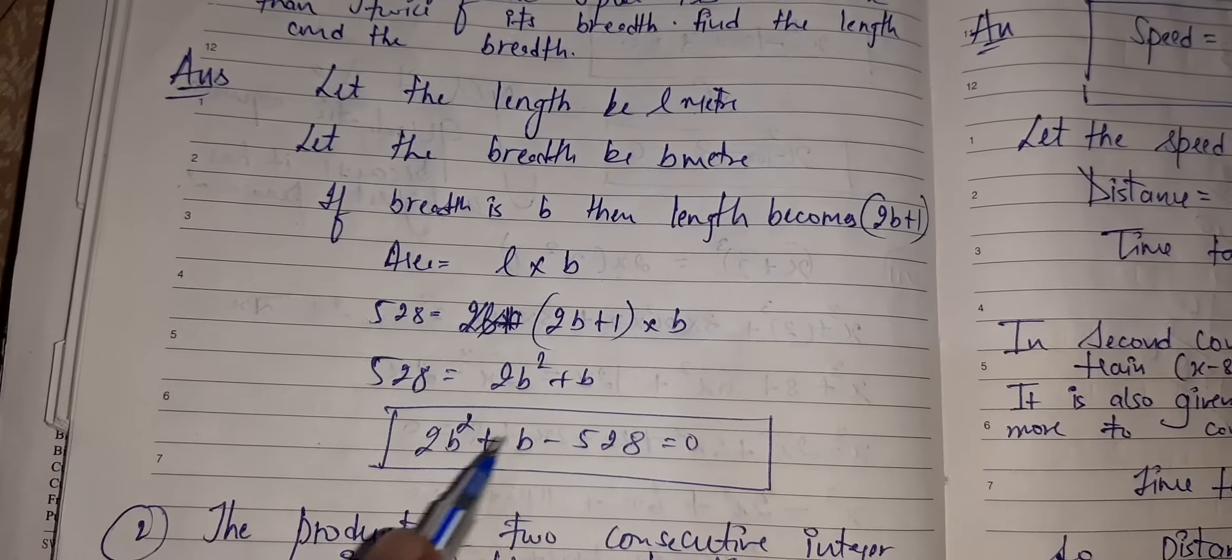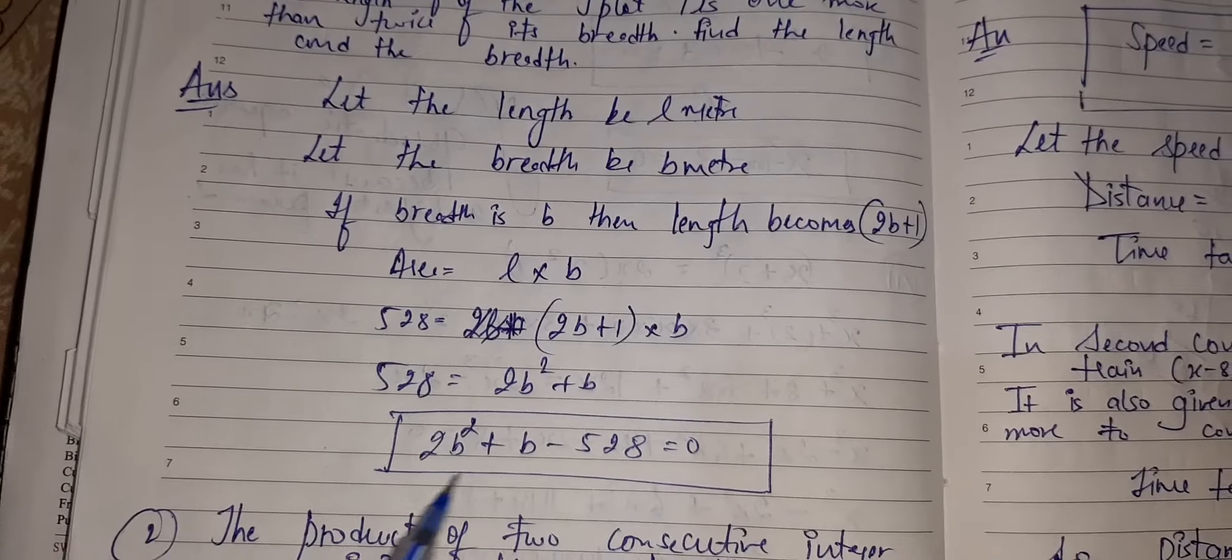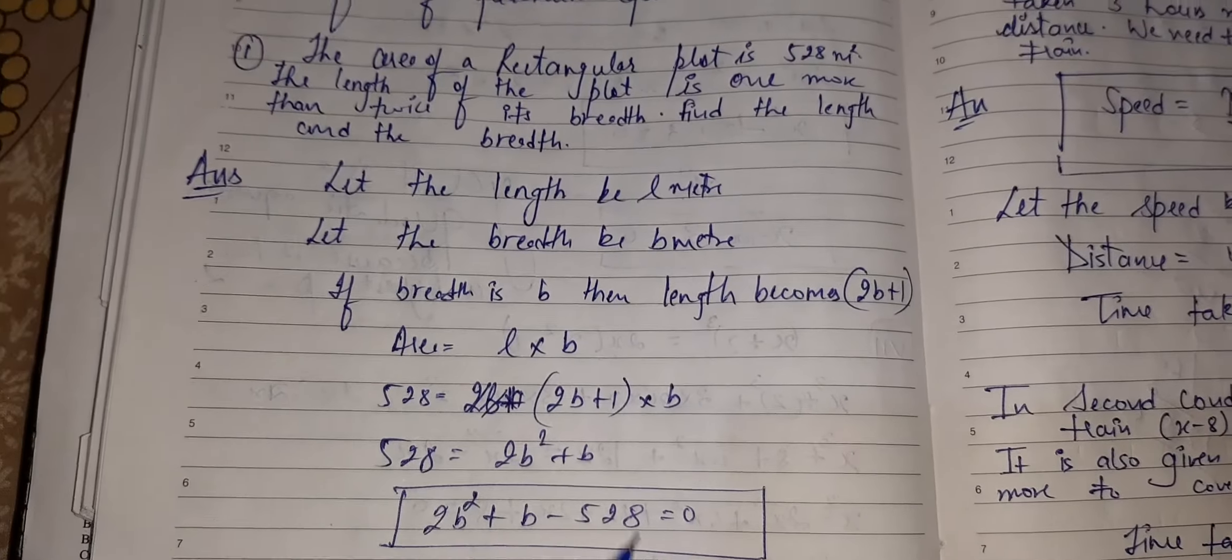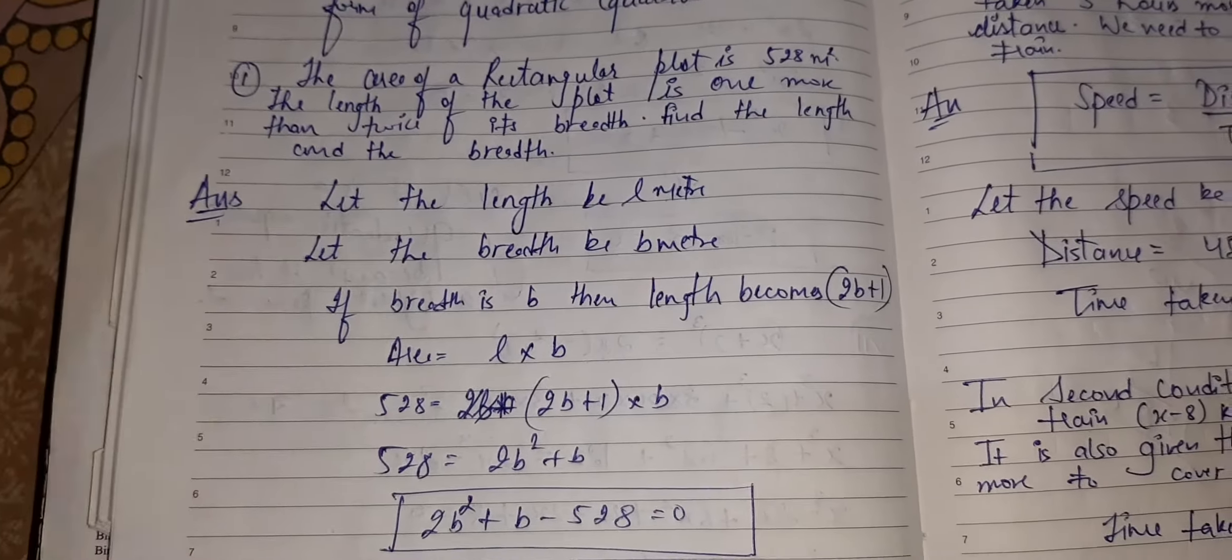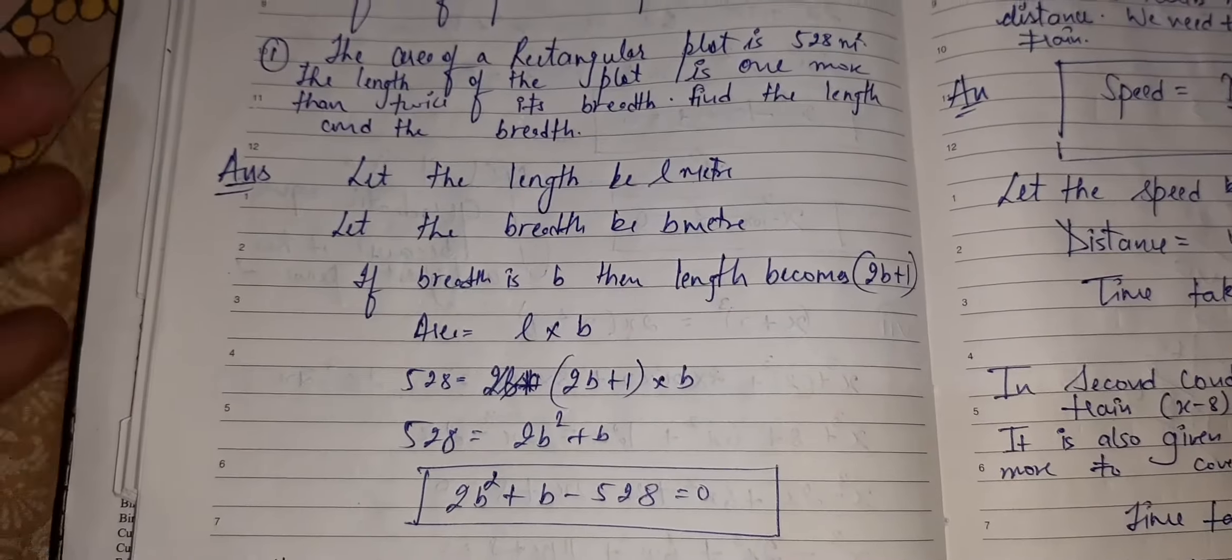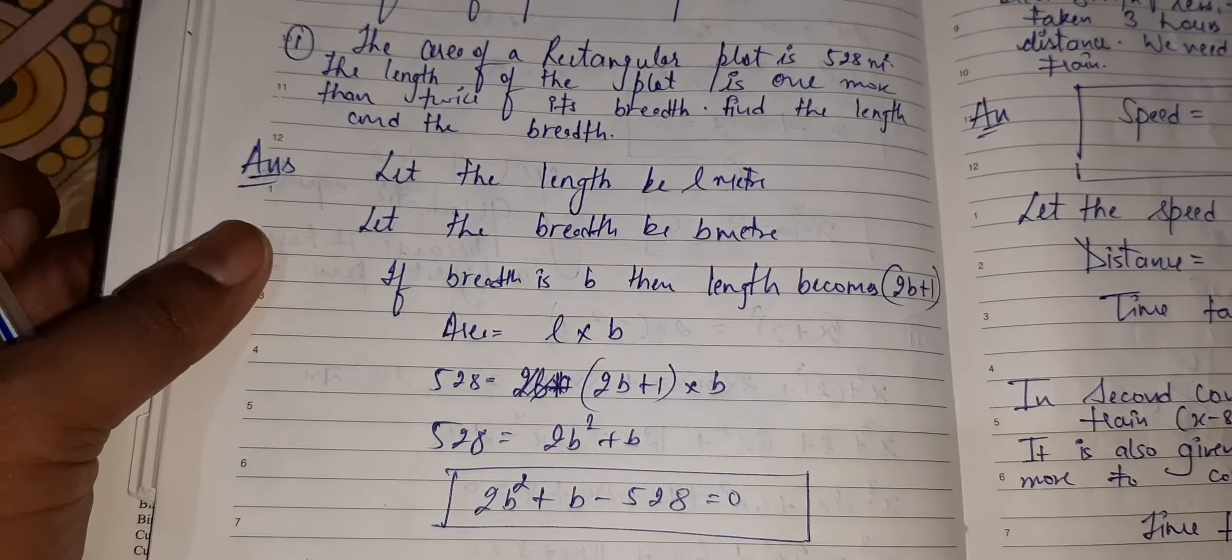528 is equal to 2B plus 1 into B. 528 equals 2B square plus B. I bring it this side. Quadratic equation is formed. They have told us to form the quadratic equation. If you want to solve it, you can solve it by your own, by splitting the middle method.